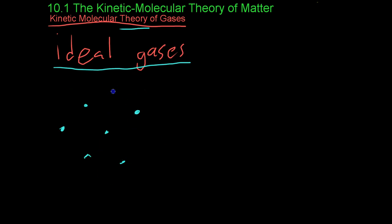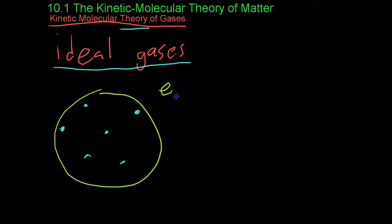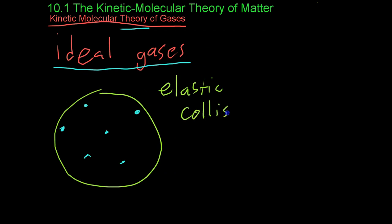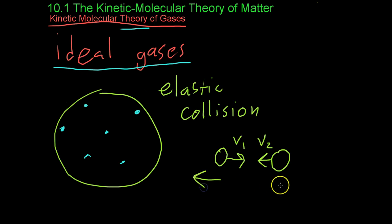We also assume that these gases undergo what are known as elastic collisions. Now, elastic collisions means that there is no loss of kinetic energy when two particles collide. For example, if you have two atoms or molecules headed at each other with some velocity, V1 and V2. If they hit straight on and then bounce directly backwards, they will leave with their same velocities, V1 and V2. There's no loss of motion when these particles collide.